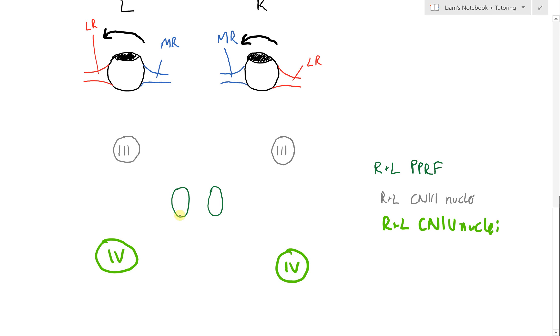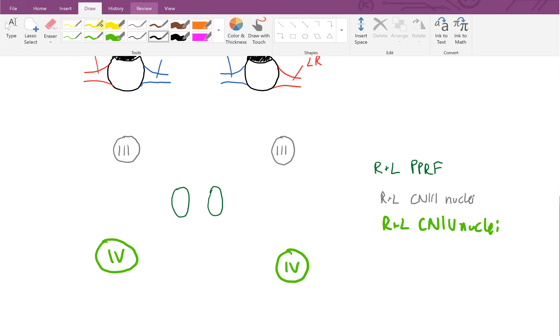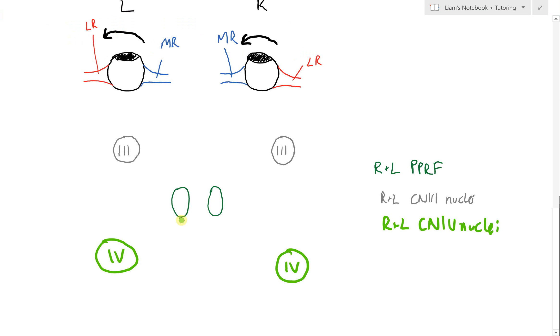Our left PPRF will activate our left cranial nerve six nuclei, which controls our lateral rectus. So activating that nuclei activates our left lateral rectus. At the same time, this sends fibers over to the cranial nerve three nuclei, which innervates our medial rectus on this side. That's how we get the activation part of this process.